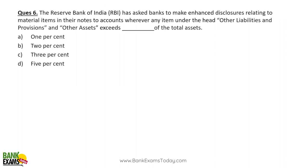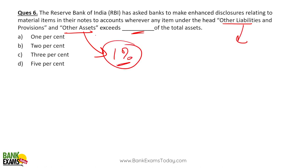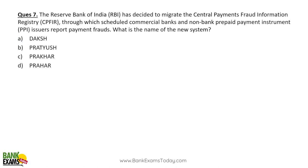RBI has asked banks to make enhanced disclosures related to material items in their notes to accounts. If any item under 'other liabilities and provisions' or 'other assets' exceeds 1% of total assets in the financial statement, the bank is required to make enhanced disclosures for that item.